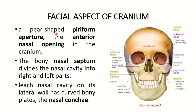A pear-shaped piriform aperture — the anterior nasal opening in the cranium — is present below the nasal bones. The bony nasal septum divides the nasal cavity into right and left parts. Each nasal cavity on its lateral wall has curved bony plates called nasal conchae — including the inferior nasal conchae on each side.